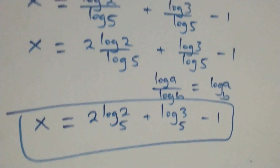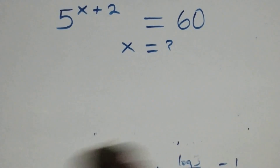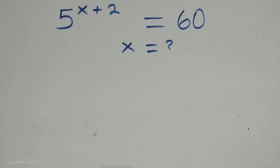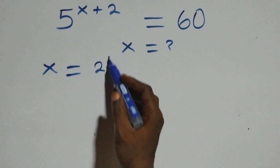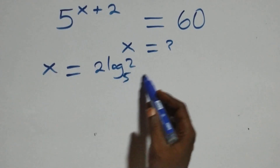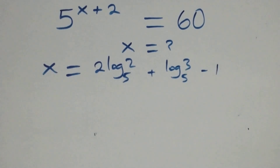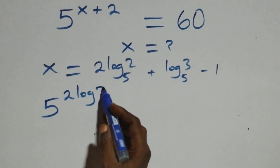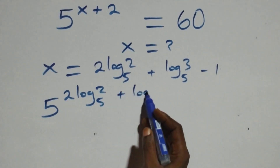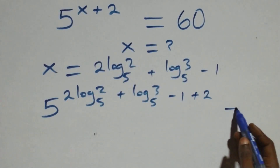Let's check if this satisfies the given problem. We substitute the value x equals to 2 log₅2 plus log₅3 minus 1. What we have becomes 5 raised to power (2 log₅2 plus log₅3 minus 1), then plus 2. Is it equal to 60?